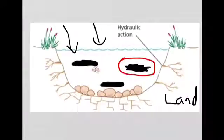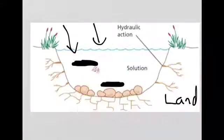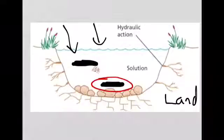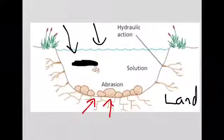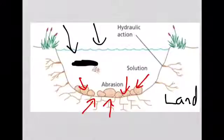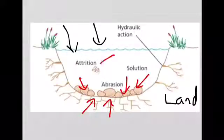This second label represents solution which is the weak acids in the water dissolving the riverbed and banks and the load that's carried within the river. This label here represents attrition. So in this example here this eroded material which is being carried along bashes into each other and breaks off little bits which fall and get transported along. So that represents the four processes of erosion.